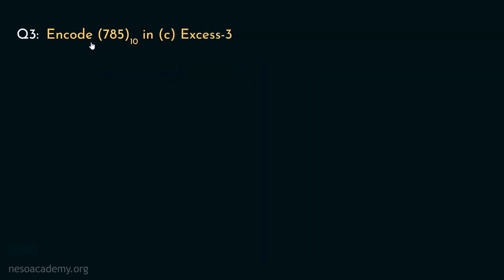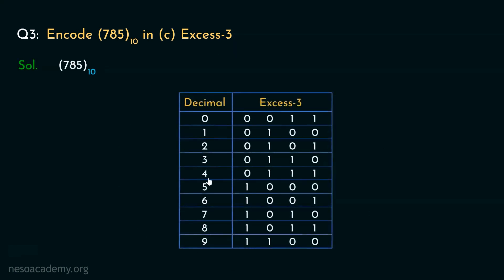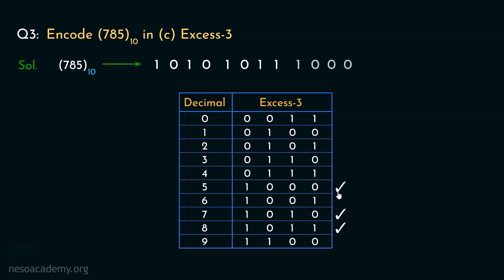Let's now move on to encoding the value 785 in XS3. We will take help from the chart and figure out the encodings for each of the digits. Now 7 is encoded in XS3 as 1010. So for the first digit 7, the encoding will be 1010. Now the next digit is 8, and for 8, the encoding in XS3 is 1011. So the second digit will be this pattern. Coming to the last one, 5, the encoding in XS3 of 5 is 1000. So 785 in decimal is represented as 1010 1011 1000 in XS3.